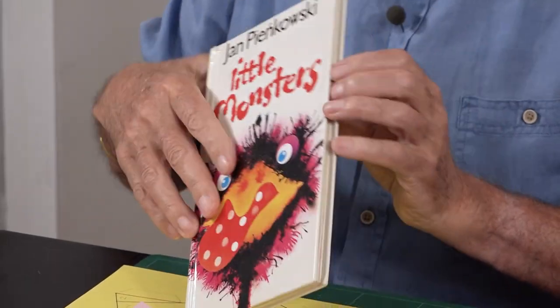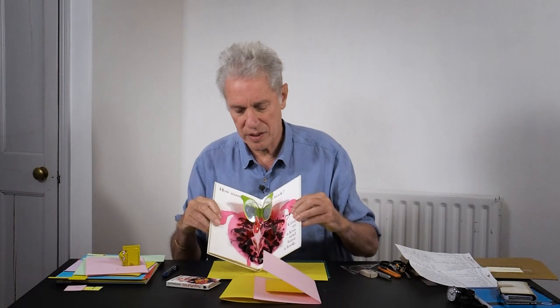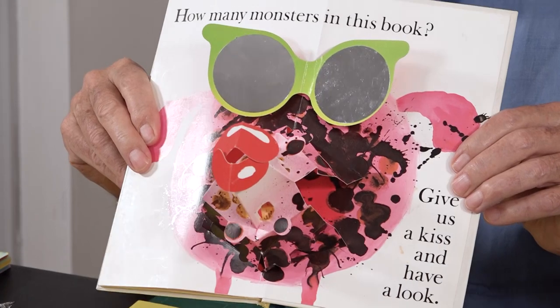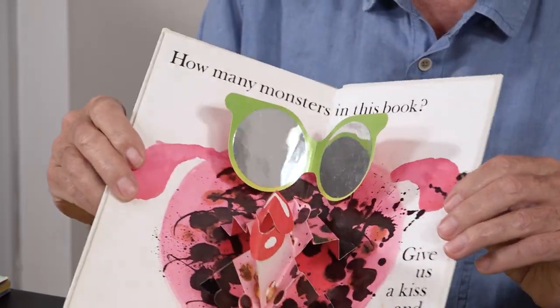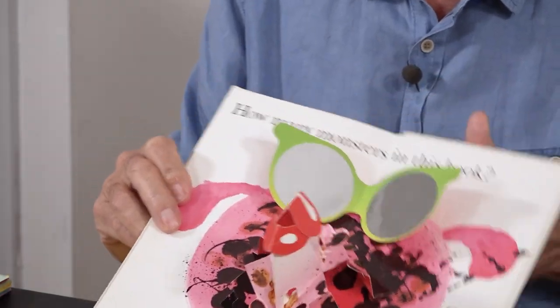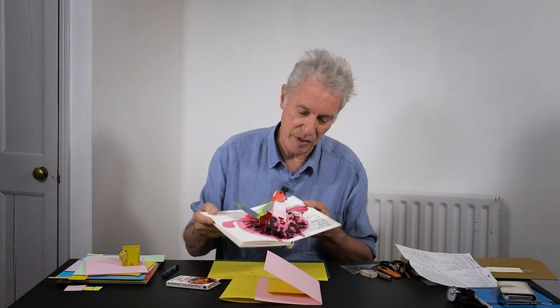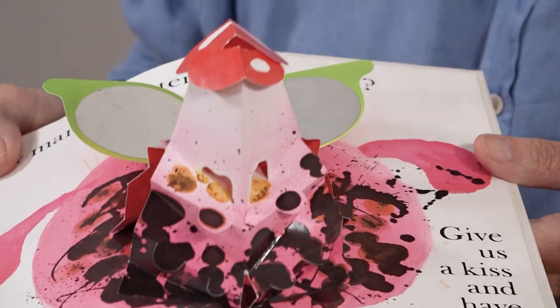This tutorial is about a concertina tower that appears in this book, Little Monsters. In this one, it's designed as a tower that comes forward and gives you a kiss while you look at yourself in the mirrored shades there. It's an intriguing mechanism that I haven't seen anywhere else. In fact, the more you flex the book, the higher it goes.